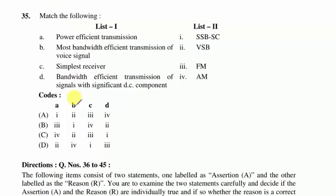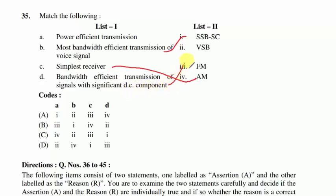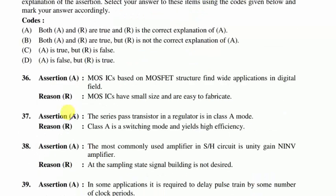Question 35: match power-efficient transmission, bandwidth-efficient transmission, most efficient transmission of voice signal, and simplest receiver. Voice signal → SSB. Simplest receiver → envelope detector (AM). Bandwidth-efficient transmission with significant DC component → vestigial sideband modulation. Power-efficient transmission → frequency modulation. Option B is correct.